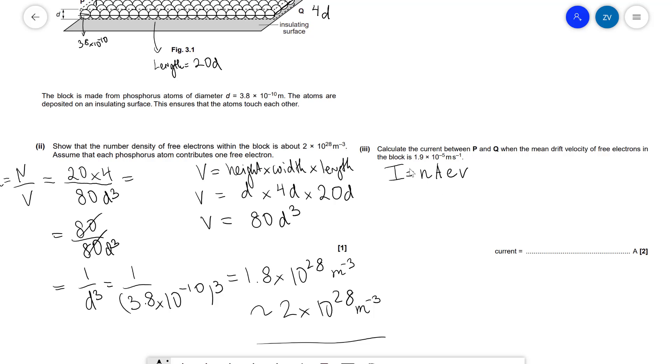Now in this case we know what the drift velocity is, we've already calculated it. As an exam tip, even if for some reason you cannot quite figure out part 2, if it's a show question you could directly use this value into part 3. So I will be equal to n, the number density, which is about 2 × 10²⁸.